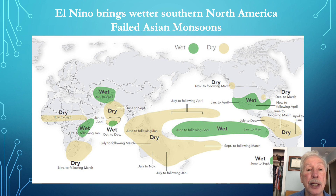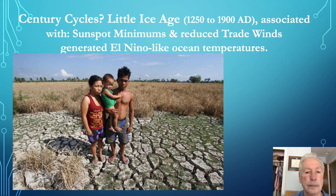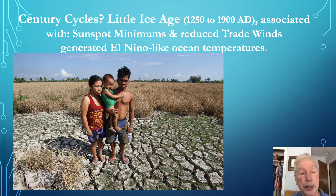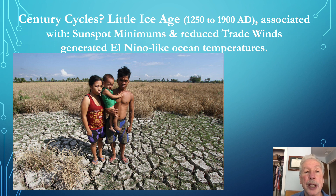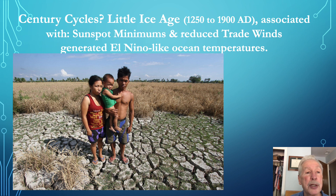In the 1998 El Niño, heavy floods in California coincided with drought and heavy wildfires in Indonesia. The 20 to 30 year positive phase of the Pacific Decadal Oscillation results in much more frequent El Niños, with suggestions of century-long cycles as well. During the Little Ice Age between 1250 and 1900 AD, decreased solar energy from sunspot minimums reduced trade winds, and temperature patterns across the Pacific resembled El Niño-like conditions.